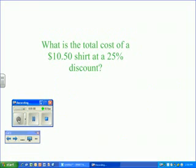Discount is the amount of money by which a regular price is reduced. A $10.50 shirt at 25% off. What is the total cost?